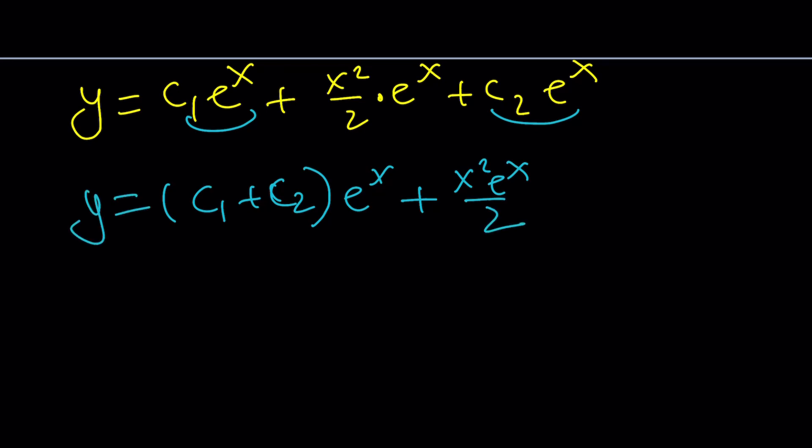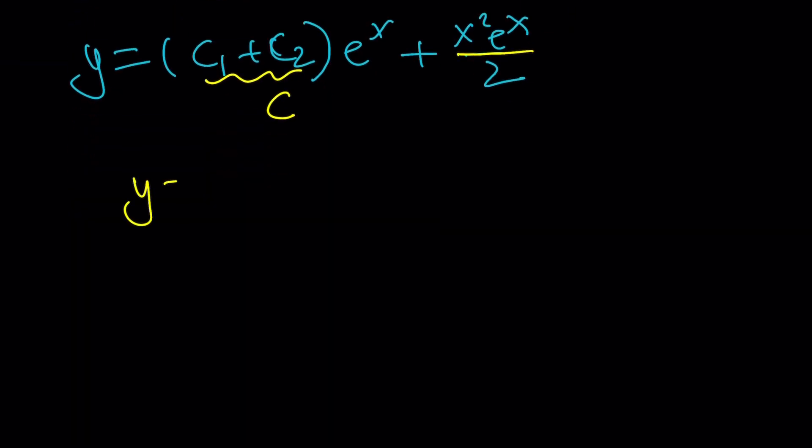Then I could probably just write it as x squared e to the x divided by two. And then I don't need another constant. And if you add a constant, you'll get it wrong because it's not going to satisfy the original equation. So, be careful about that. Don't over constant it. c sub one plus c sub two is just another constant. So, why don't we call that c at the end? And this is basically going to give us the general solution.